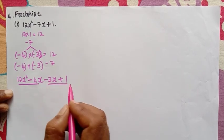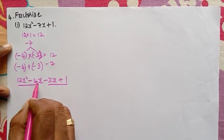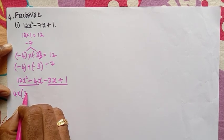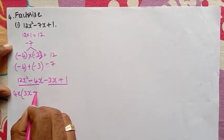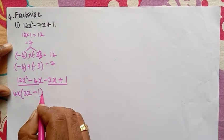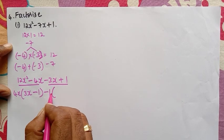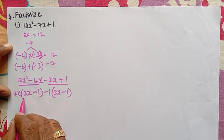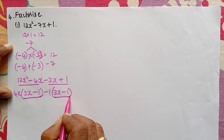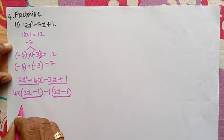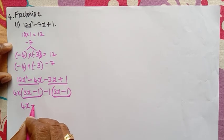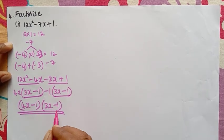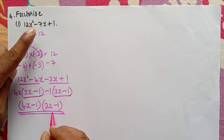We take 4x as common from the first two terms. 4x into x is x square and 4x into minus 1 is minus 4x. Then we take minus 1 as common from the last two terms: minus 1 into 3x is minus 3x and minus 1 into minus 1 is plus 1. We note that the bracket 3x minus 1 appears in both groups, so we can write it as 4x minus 1 into 3x minus 1. These are the two factors of 12x square minus 7x plus 1.